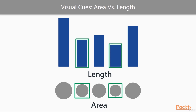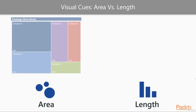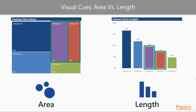To give us some perspective, let's take a look and compare a couple of Power BI charts, again comparing area versus length. Let's compare a Power BI treemap versus a column chart. If we look at Category C and Category D on the treemap, and then compare that same data on the column chart, we can see that the differences in size are more easily identified on the column chart.